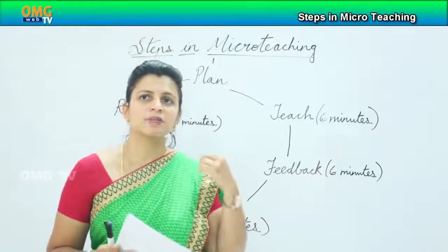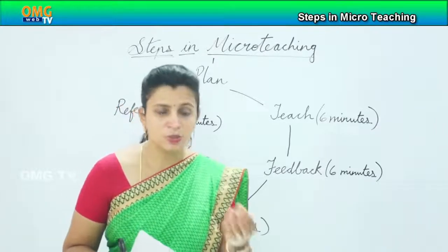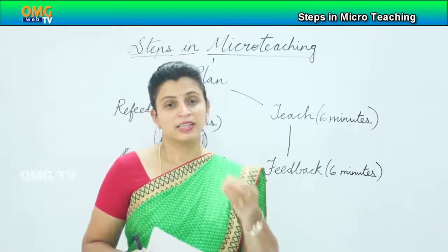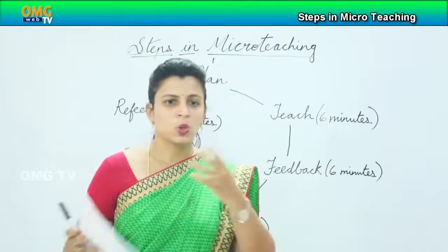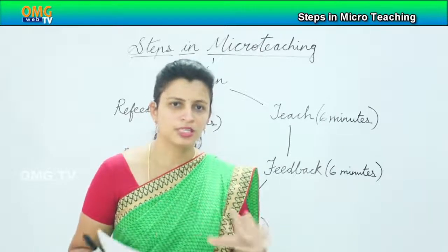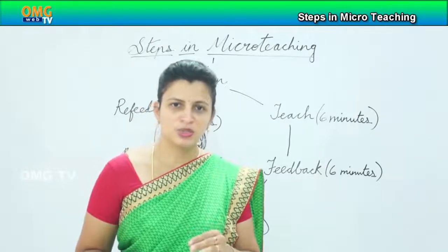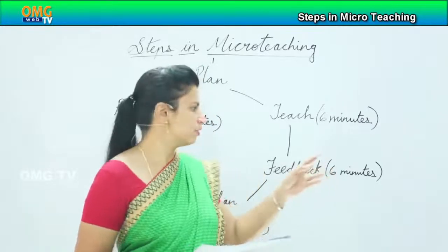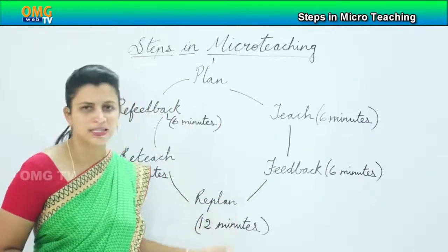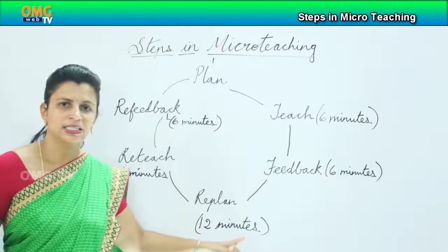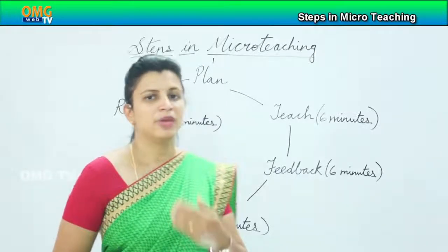For example, the teacher might have been too fast, or very aggressive to a particular student's response, or not very audible, or overlapping concepts. There could be any kind of comment, but the teacher trainee should not take this personally and should instead choose to work on the valuable feedback. After obtaining the feedback, the next step is to re-plan the lesson. Twelve minutes is recommended for re-planning so that you don't make the same mistakes over and over again.